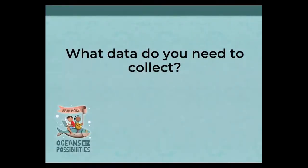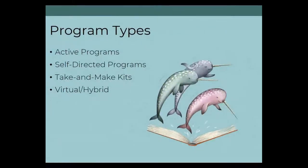What data do you need to collect? We're going to give you a breakdown of the data needed for the survey and what defines a program and who you count as attending. For the purpose of this survey, you're counting two types of programs: active and self-directed. Both of these categories combine all formats — they can both be in-person, virtual, or hybrid.